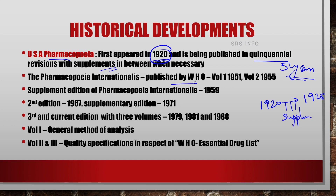The WHO initiative was the Pharmacopoeia Internationalis, which includes the list of drugs used in different countries under their pharmacopoeias. This was the main function of Pharmacopoeia Internationalis — it includes drugs used internationally. It was published in two volumes for the first edition: the first volume in 1951 and the second volume in 1955. A supplementary edition was also published in 1959.